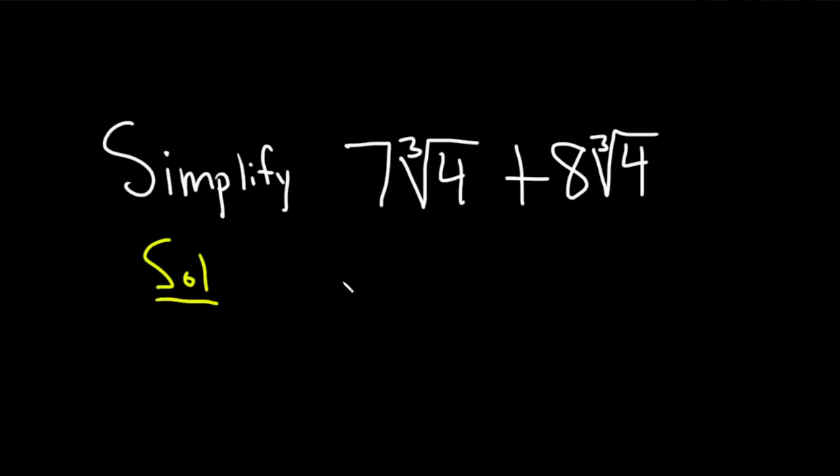So I'm gonna show you three different ways to do it. Method one, which a lot of people like, is you can pull out the cube root of four because you have a common factor. So you can put it in the front or you can put it in the back.